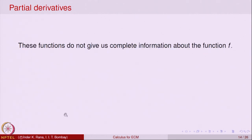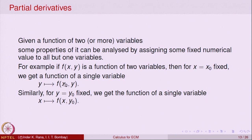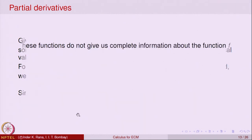These two functions do not give complete information about the original function, but they give a reasonable amount of information. These are normally called the coordinate curves for the function, because in some sense you are fixing one coordinate x₀ and letting the other coordinate y vary, or fixing one coordinate y₀ and letting x vary. We will not have much opportunity to use them formally, but the concept is useful.